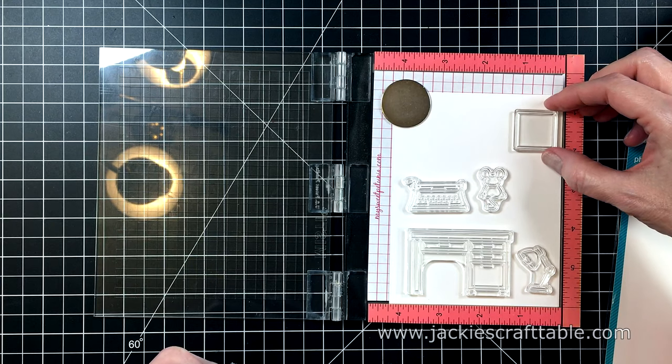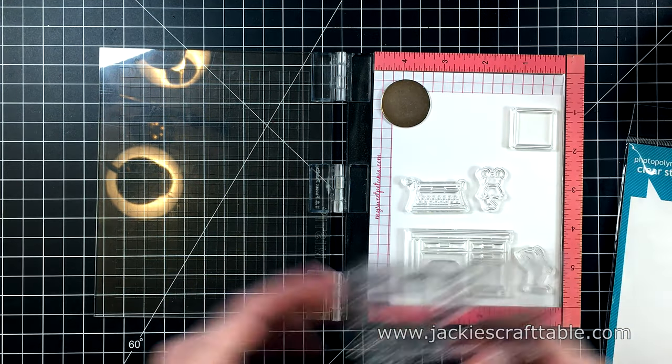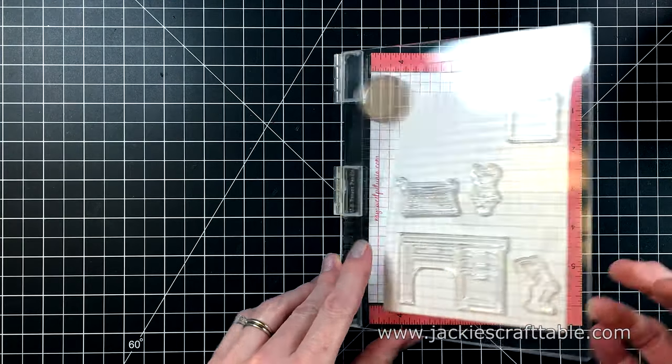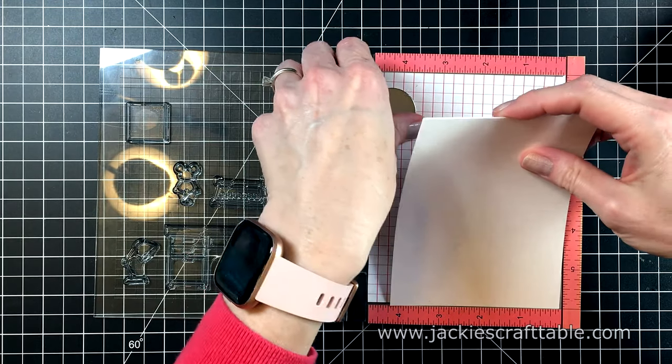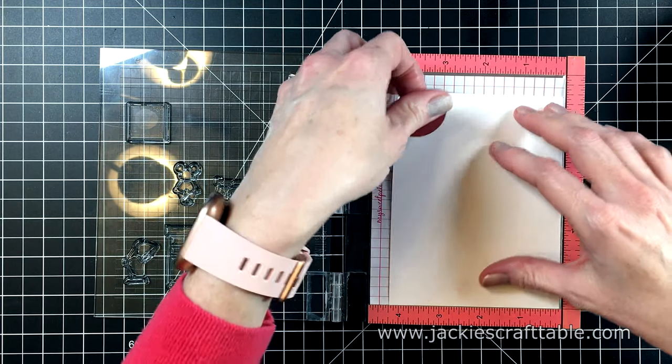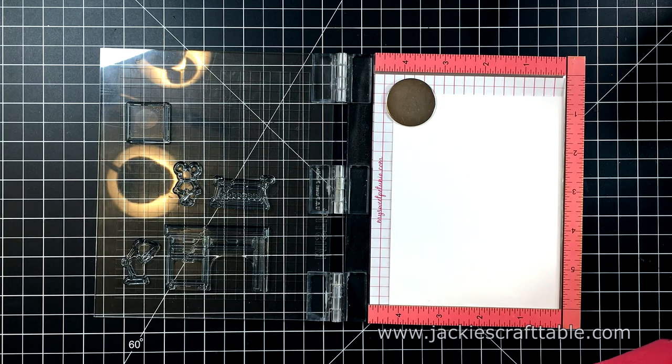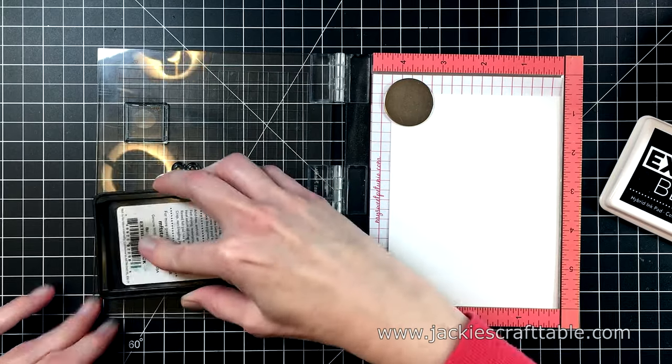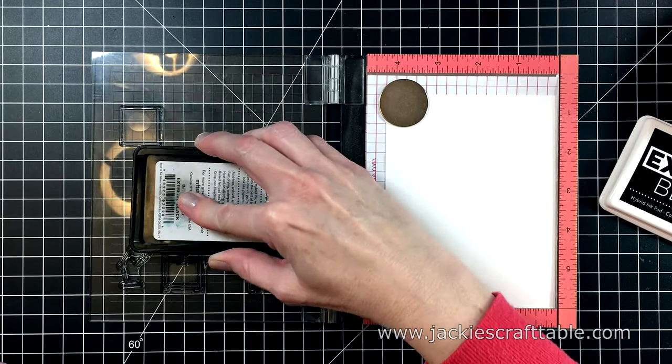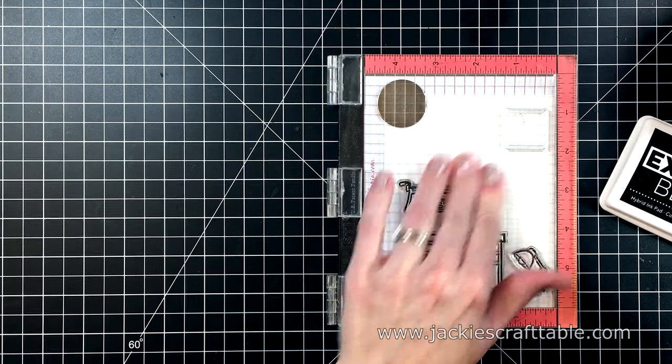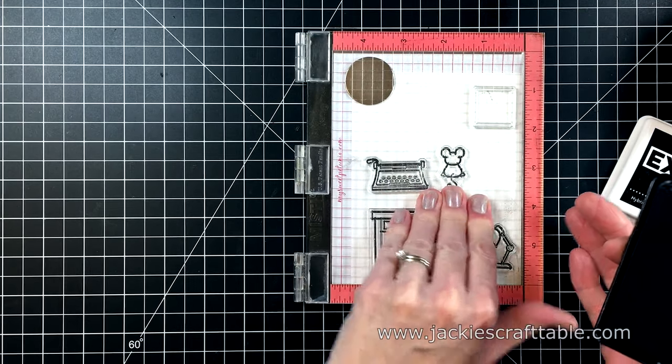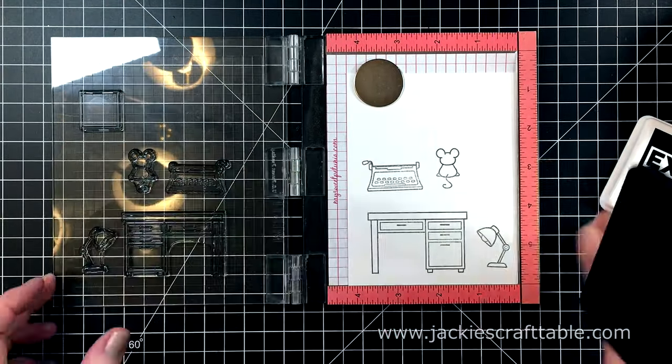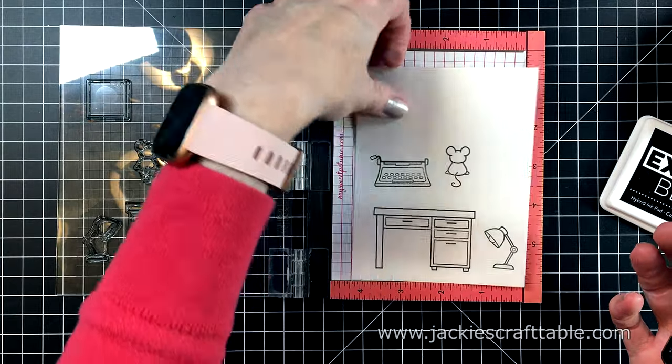I'm going to ink up my images with some black dye ink from MFT, and it's called Extreme Black ink. But I'm not going to stamp out that little piece of paper at the top right—I'm going to show you what I'll do with that in just a minute. But since these are new stamps, I like to ink them up a few times just to get my lines nice and black. So the card I'm creating with this stamp set is going to be a fun interactive card, and I don't usually make those but I just had to with this one.